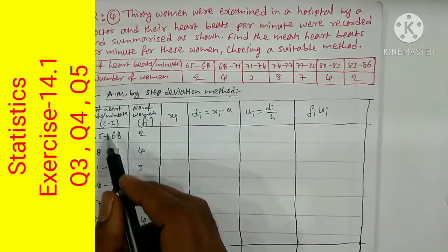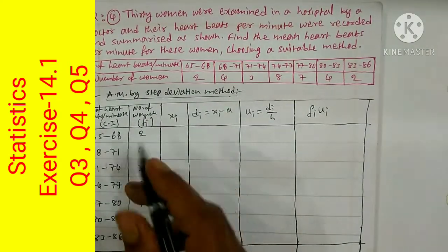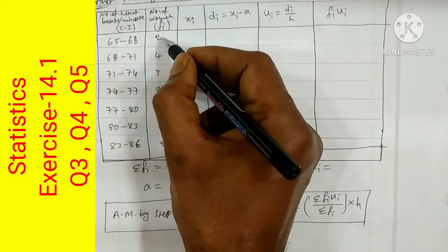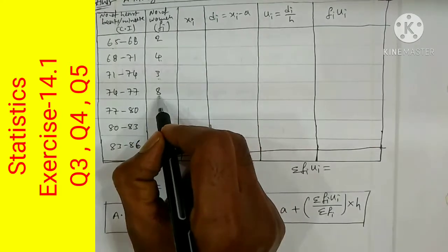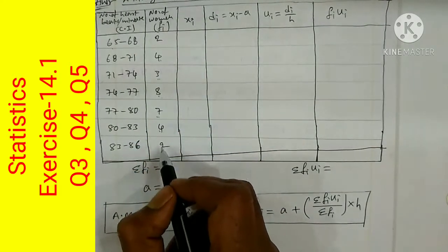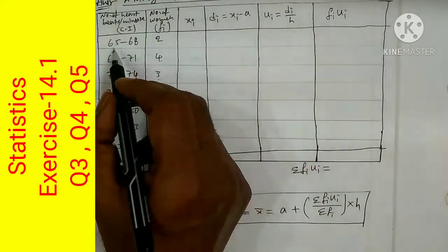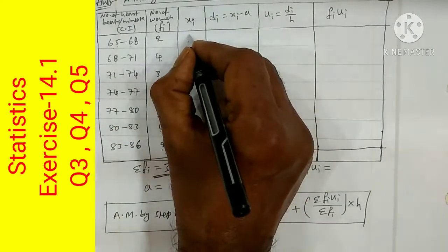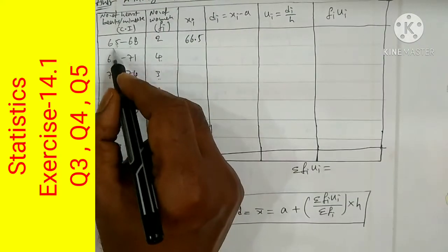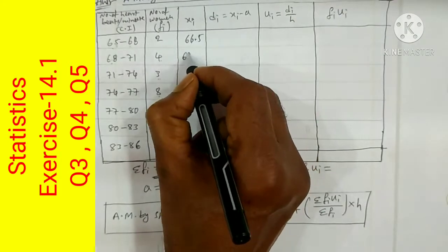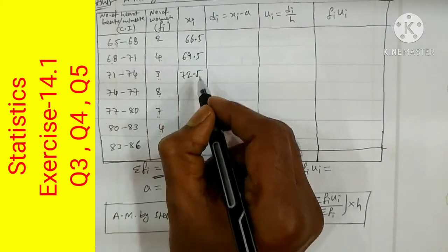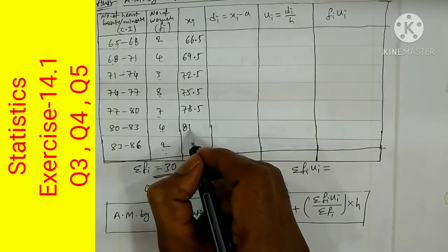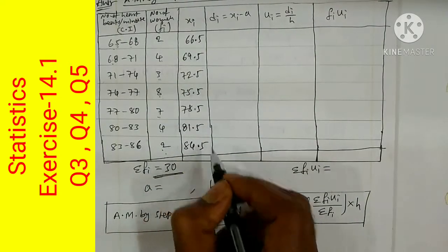In question 4, the number of heartbeats are given as class intervals and the frequency (number of women) is given. The class intervals are 65-68, 68-71, and so on. Total frequency: 2+4=6, 6+3=9, 9+8=17, 17+7=24, 24+4=28, 28+2=30. The middle values are calculated: (65+68)/2 = 66.5. Since class width H = 68−65 = 3, we add 3 each time: 66.5, 69.5, 72.5, 75.5, 78.5, 81.5, 84.5.